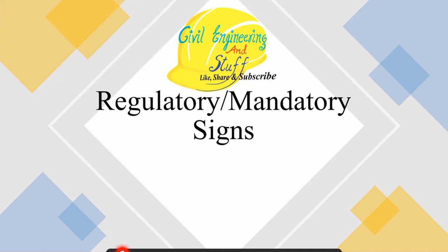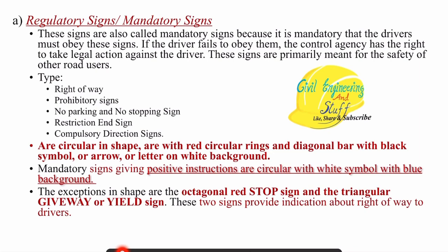This was a general discussion about traffic sign installation. It is very important to know not only about the traffic signs themselves but also where and when we should put them so that they can serve their purpose. Now let us discuss the three types of traffic signs. The first is the regulatory sign or mandatory sign. These are compulsory to follow, and if the driver does not obey them, the control agency may take legal action — some form of penalty will be imposed.